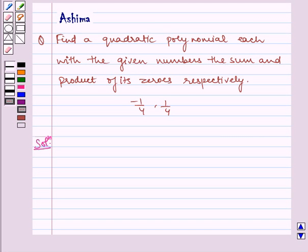Hello and welcome to the session. Let us discuss the following problem today. Find a quadratic polynomial with the given numbers, the sum and product of its zeros respectively: minus 1 by 4, 1 by 4.